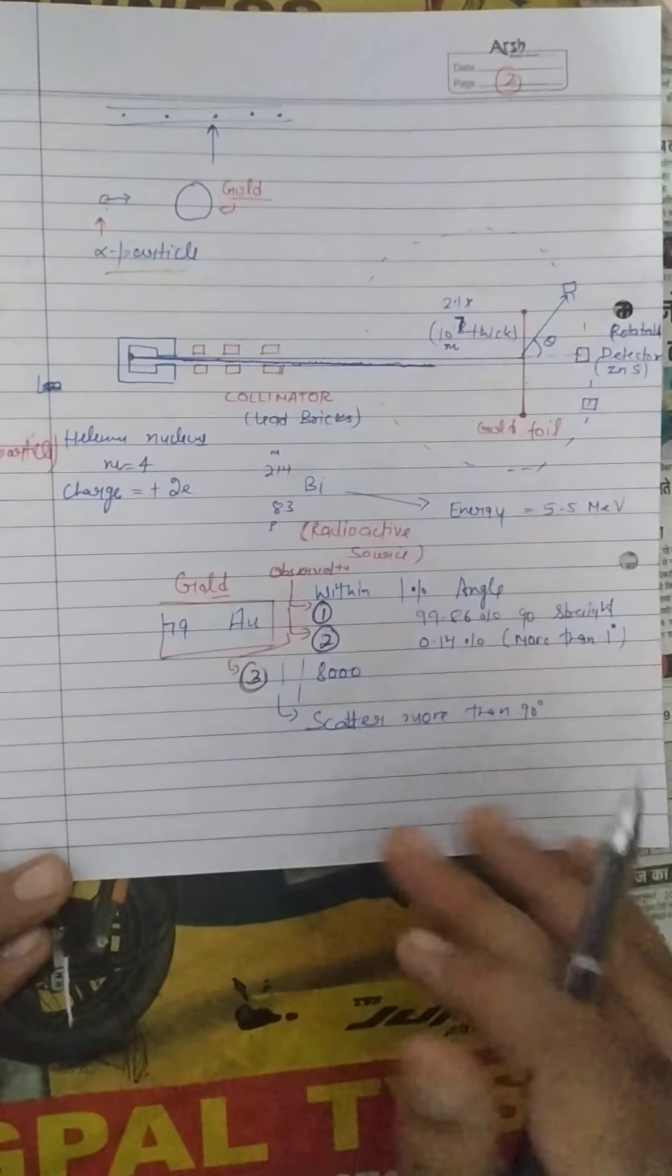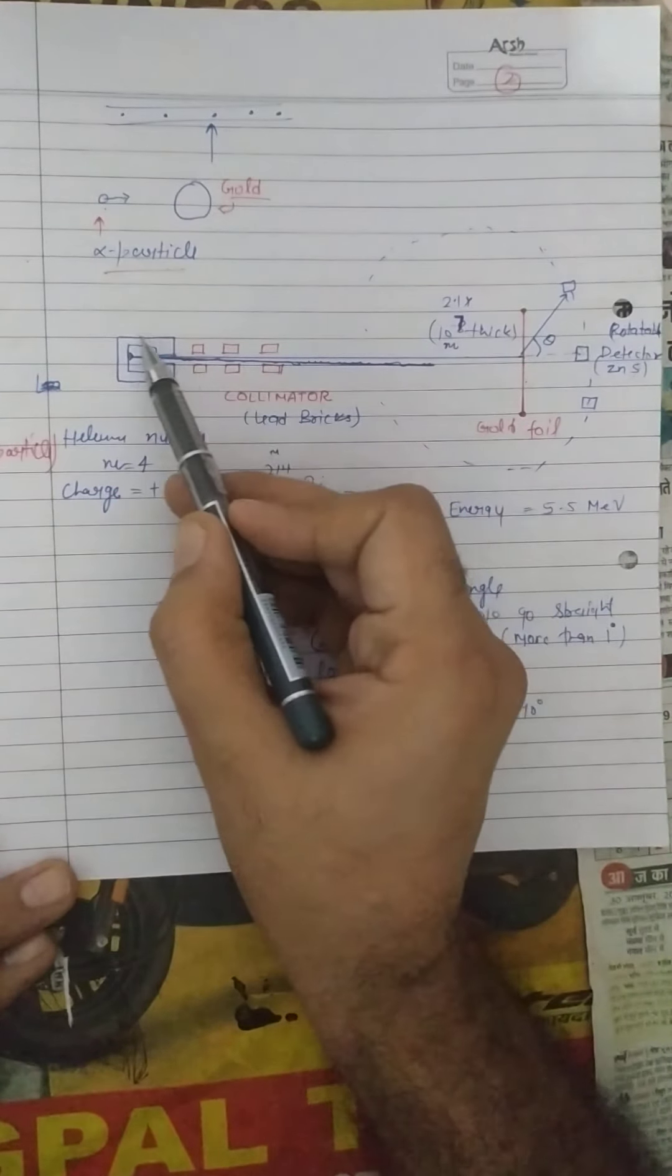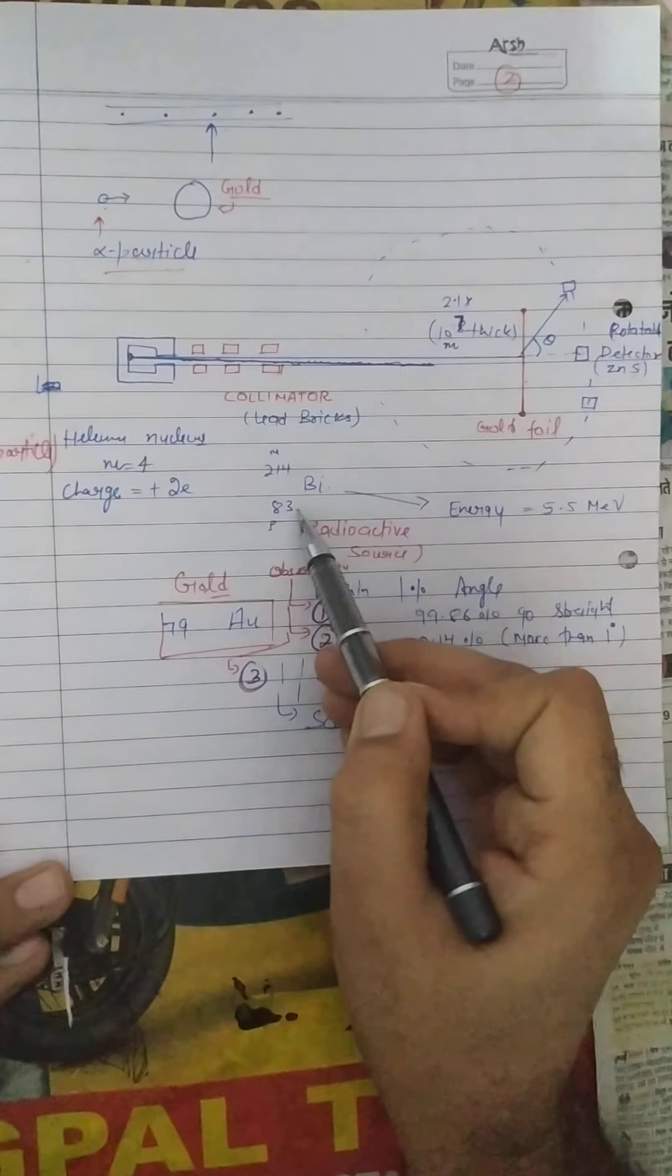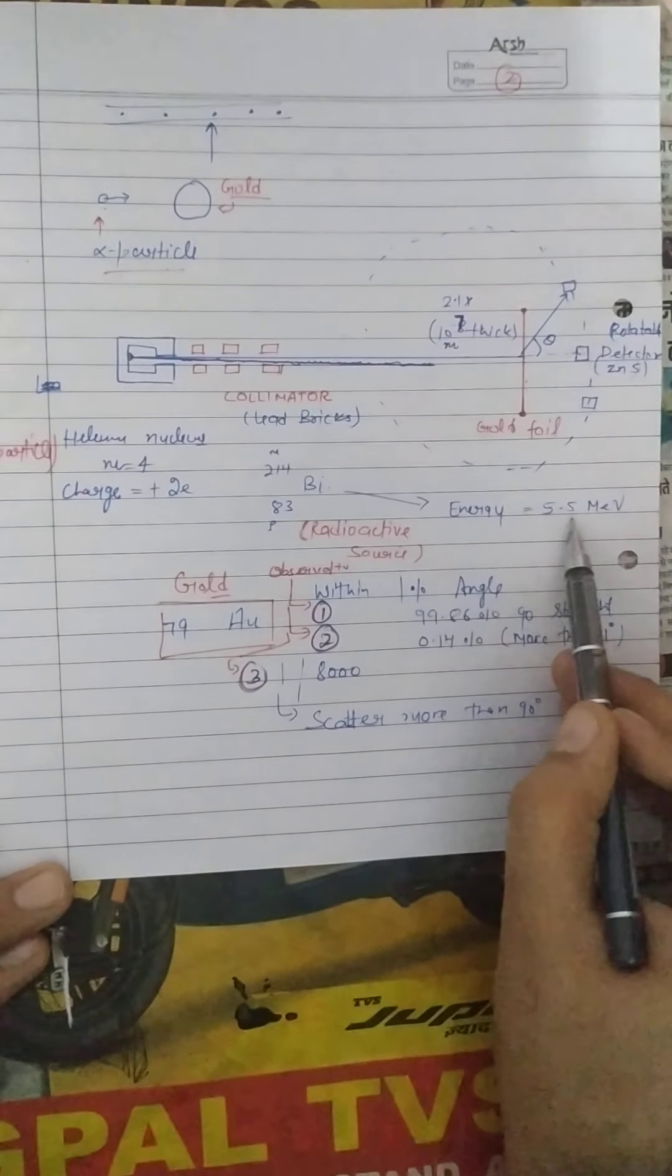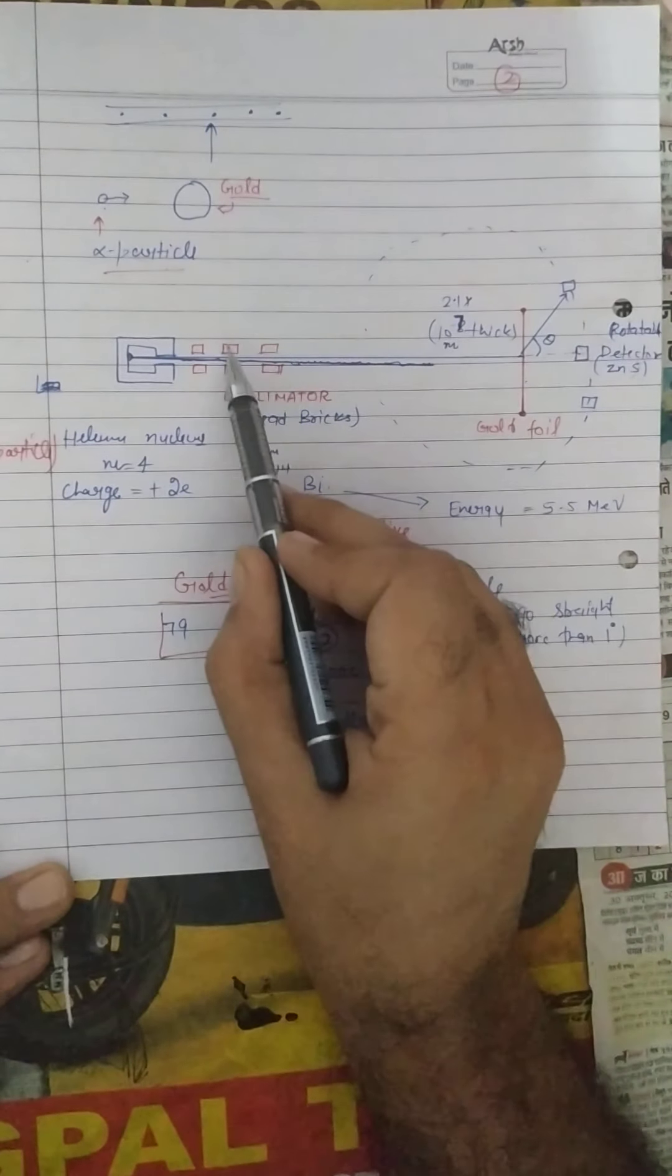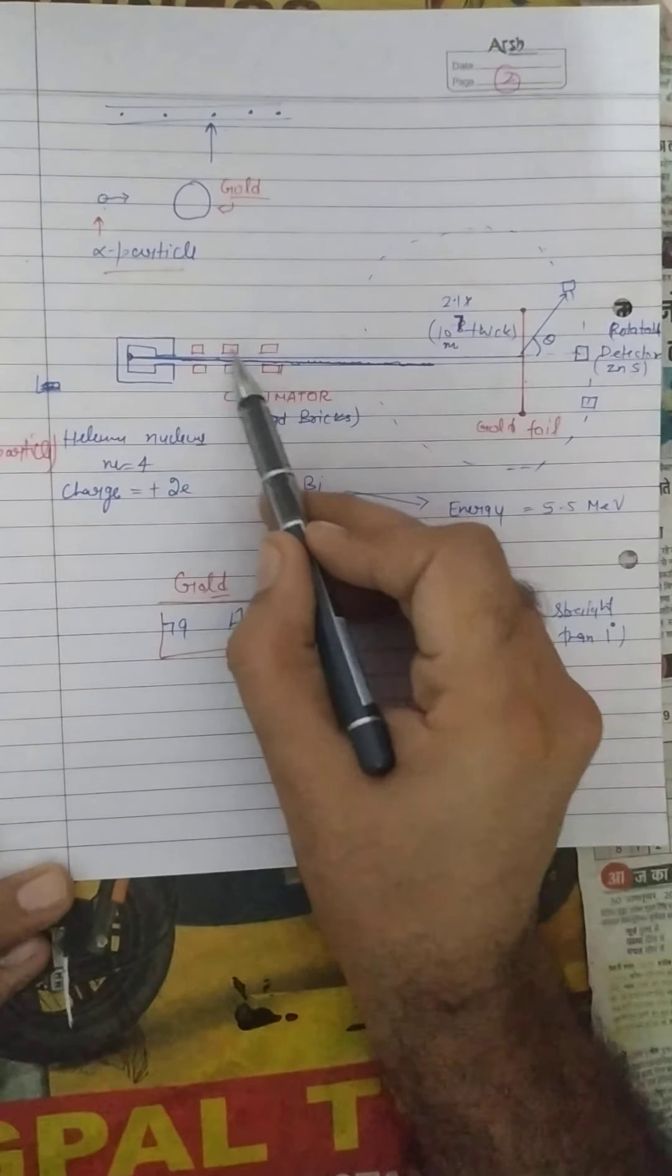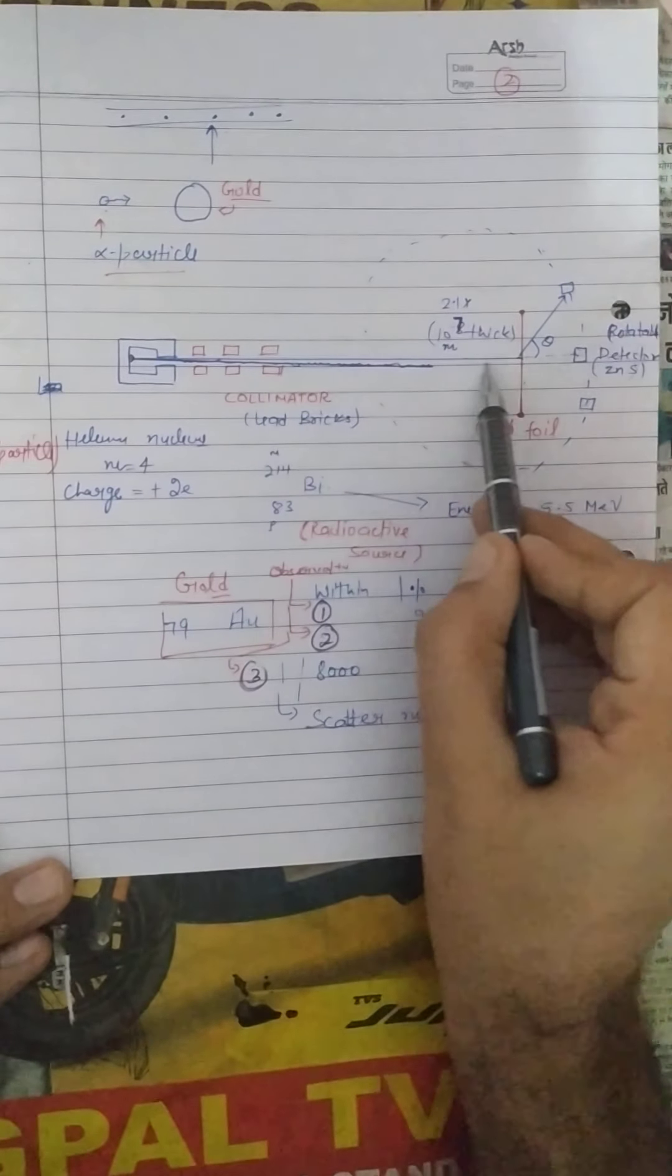So how the setup works: there is a collimator and here it is a collimator. Before that there is a particular source from which the alpha particles are coming out. This particular source is a metal of bismuth having a mass of 214 and the atomic number is 83. So they are bombarded with too much energy, that is 5.5 mega electron volt. These are the collimators that are made up of lead bricks. Due to this lead brick, most of the alpha particles that are coming out in stray paths will absorb, and due to this lead bricks they go with a narrow beam.